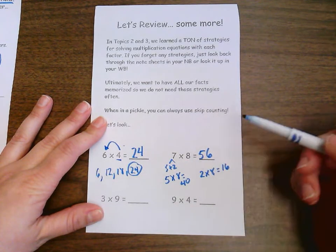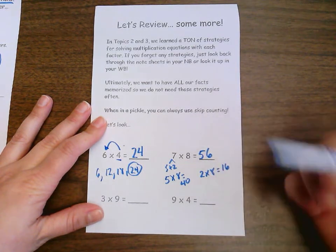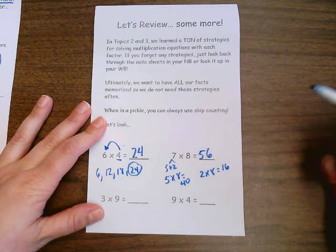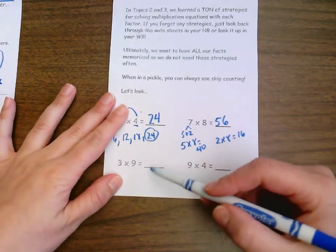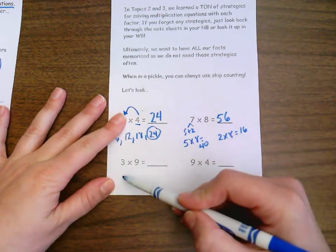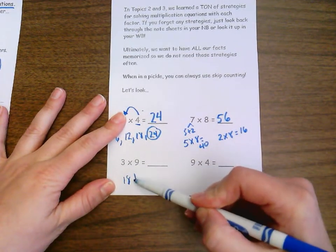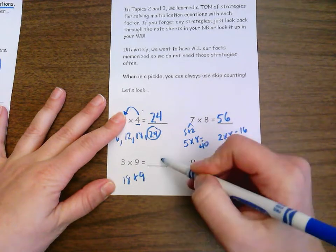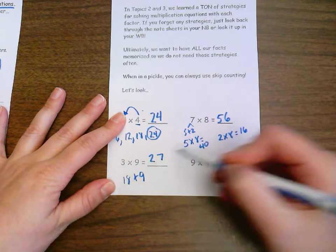Again, I could skip count by sevens. Seven, 14, 21, etc. Eight times until I got to 56. Three times nine. I'm going to use my three trick where I can think of it as doubling plus one. I know that nine doubled is 18 and I'm going to add one more nine and that is going to give me 27.